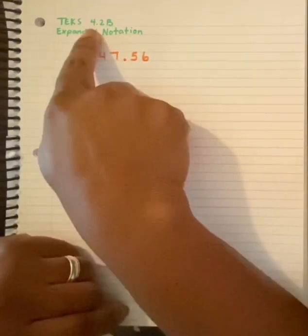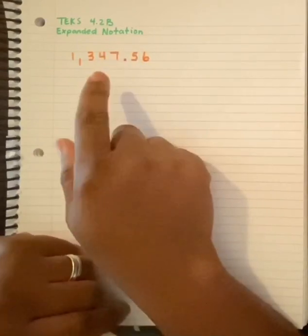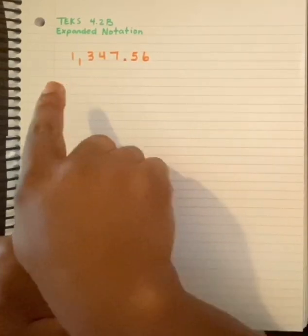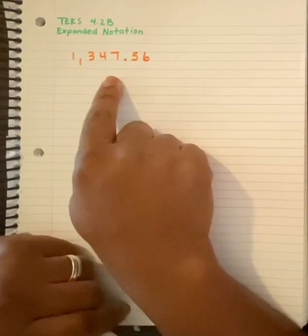Today we're going to focus on TEKS 4.2b, Expanded Notation. Expanded Notation is basically expanding or opening the number up and determining the value of each digit.